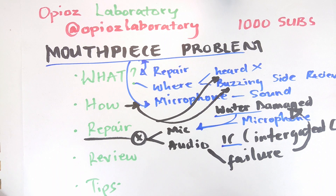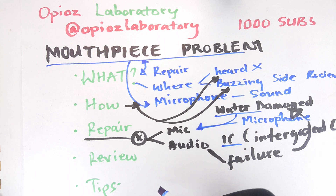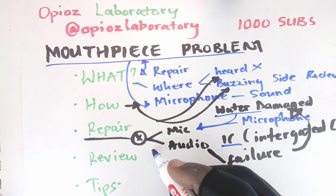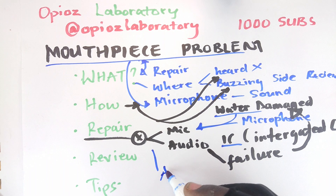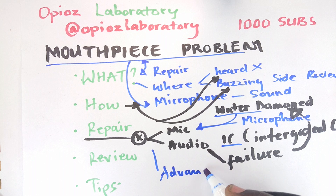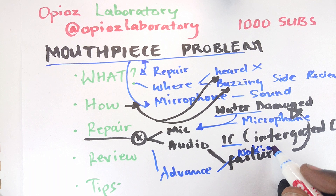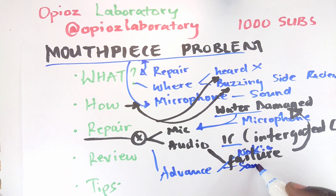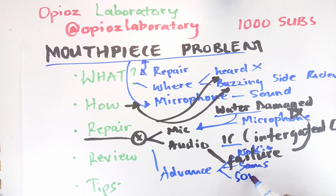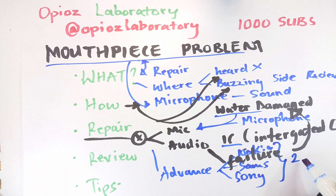I should also mention something you may need to know about more advanced phones. Renowned brands — call it Nokia, Samsung, iPhone, Sony — all of those will actually implement two sets of mics.